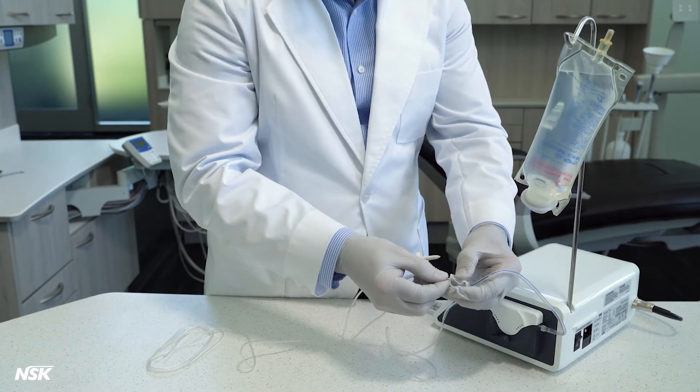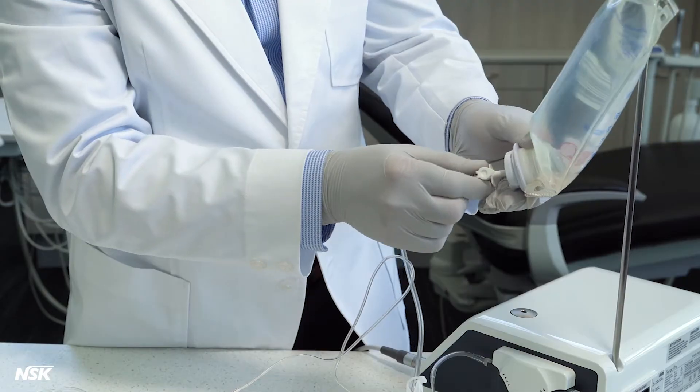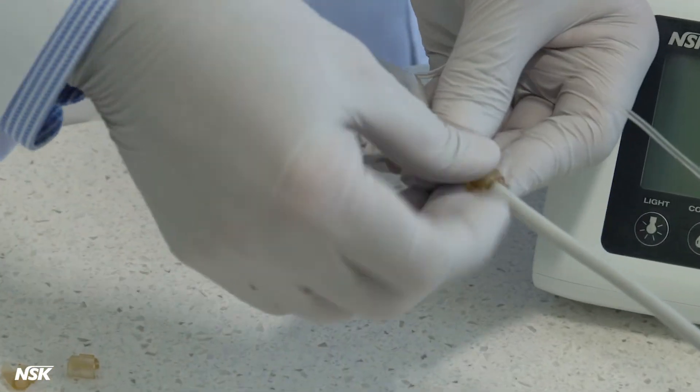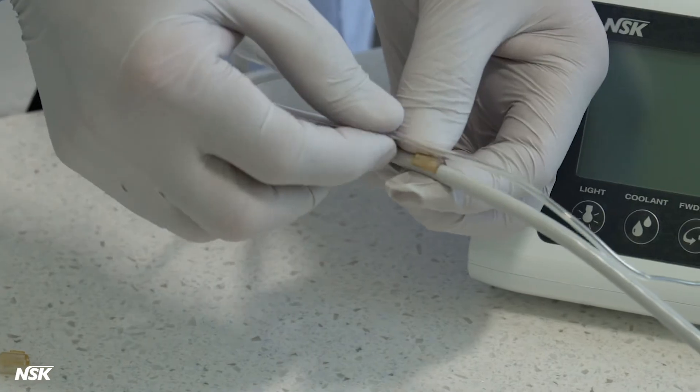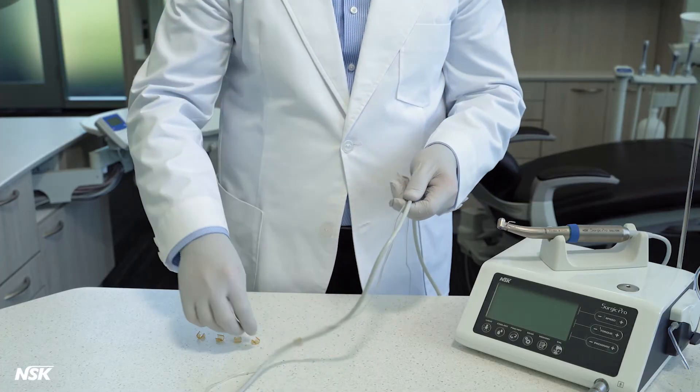Clamp the irrigation tube to stop the flow of fluid and insert the needle at the end of it into the saline bag. Attach the irrigation tube to the cord using seven holders, which are autoclavable. The irrigation tube, however, cannot be autoclaved and is single-use.